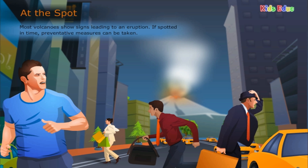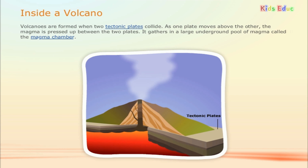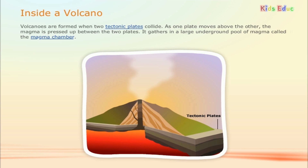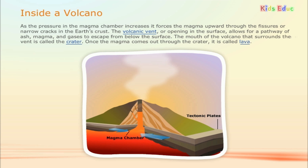Most volcanoes show signs leading to an eruption. If spotted in time, preventative measures can be taken. Volcanoes are formed when two tectonic plates collide. As one plate moves above the other, the magma is pressed up between the two plates. It gathers in a large underground pool called the magma chamber. As the pressure in the magma chamber increases, it forces the magma upward through fissures or narrow cracks in the earth's crust.